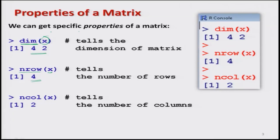Similarly, the number of columns of a matrix can be determined by the command `ncol` — number of columns — and inside the bracket you give the variable containing the matrix. Here there are 2 columns, so `ncol(X)` gives you the answer 2. You can see I have given the screenshot here, and if you want to try yourself, you can try these commands on your own computer.